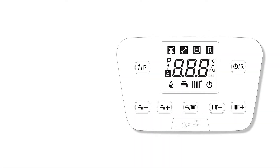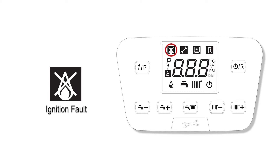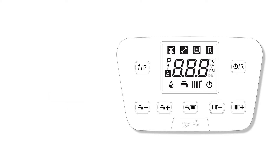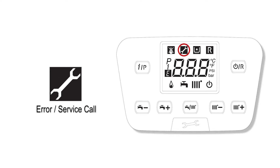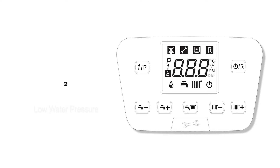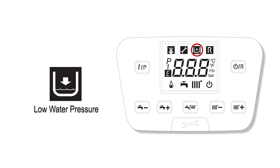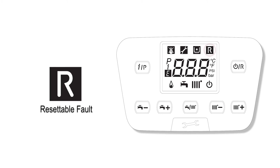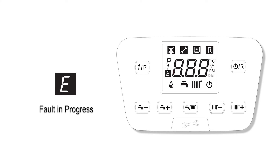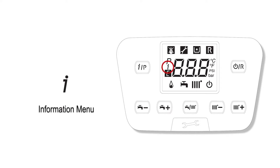Now we will look at the display itself. If there is an ignition fault, this icon will flash. A boiler fault requiring service will flash the wrench icon. If the boiler water pressure drops below 7.25 PSI, this icon will flash. The R icon is for a manually resettable fault. E is for a fault in progress. I is for the information menu. P is the programming or parameter menu.